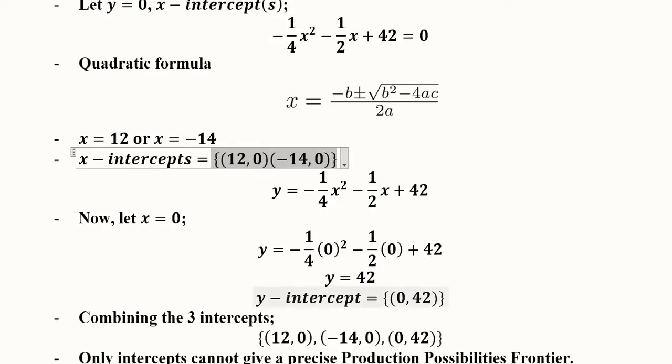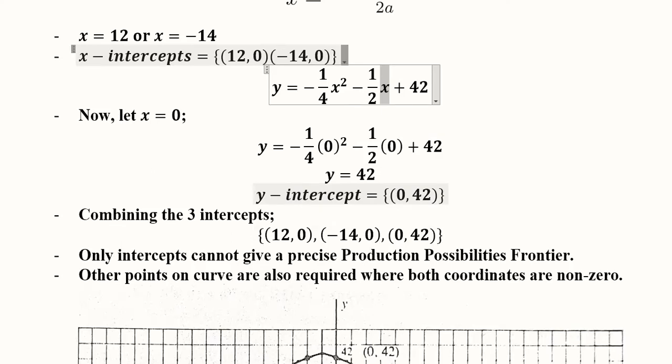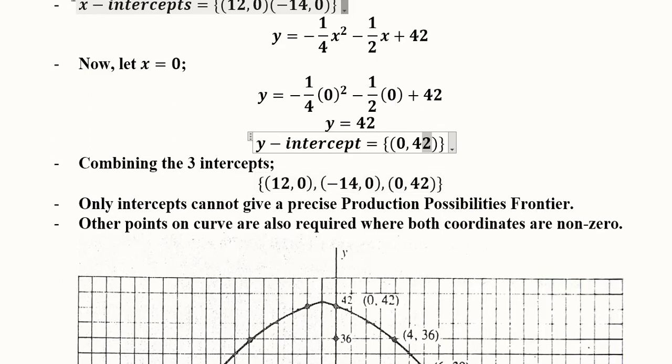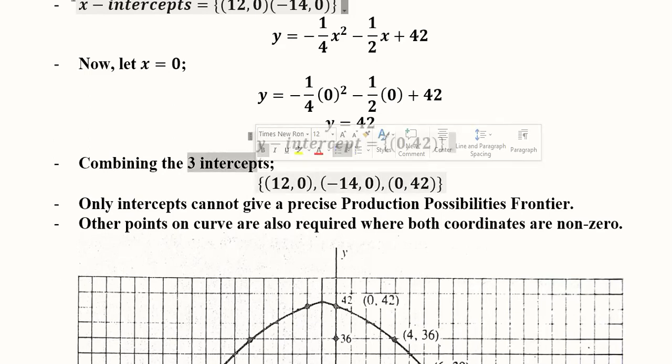Now for the y-intercept, we can put x equal to 0. I have substituted x equal to 0, which will give me the value of y. This means the value of x is 0 at this point. There is only one y-intercept because the power of y was 1, so only one root exists. The value of x is 0 when the value of y is 42, giving us (0, 42).